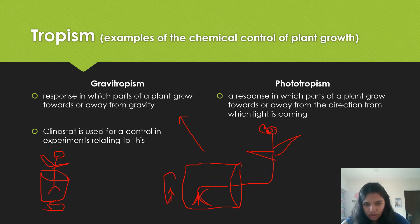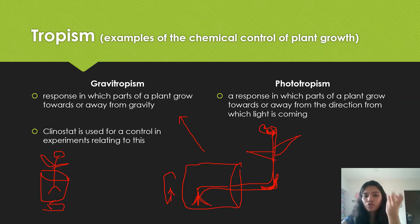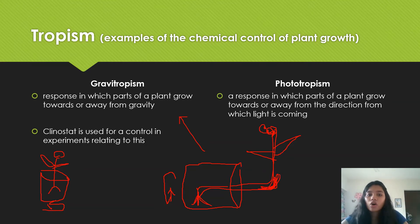Let's draw this out. Auxin is produced in the plant shoot and travels all the way down. When this happens, the shoot grows upwards because this side gets longer due to auxin falling on it. Gravity draws auxin downwards, and auxin stimulates plant growth and cell elongation, so this part of the plant grows upwards.